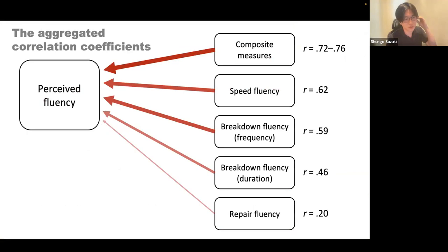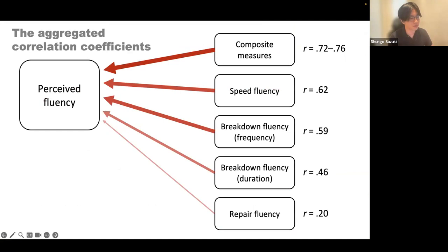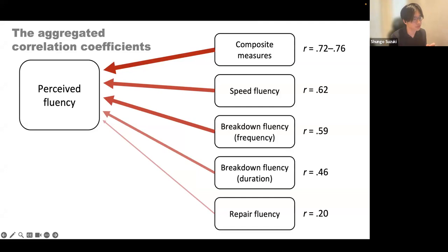Here is a visualization of what we found. Composite measures show the strongest effect sizes — speech rate and mean length of run — because composite measures tap into multiple aspects of fluency. Speed fluency and pause frequency were also strongly related to subjective ratings of fluency, while the duration aspects of breakdown fluency were only moderately associated with fluency judgments. Depending on which aspects of breakdown fluency you look at, the association with perceived fluency can vary. Our meta-analysis showed that repair fluency was weakly but significantly associated with fluency ratings.